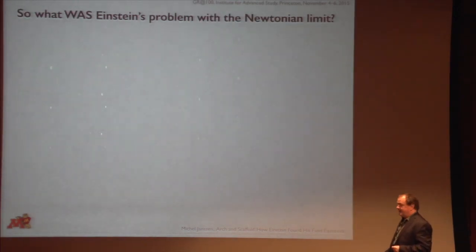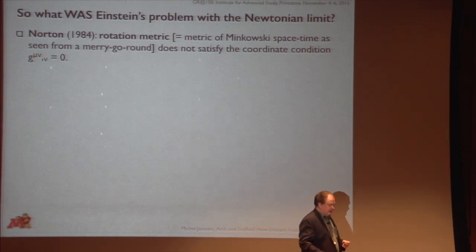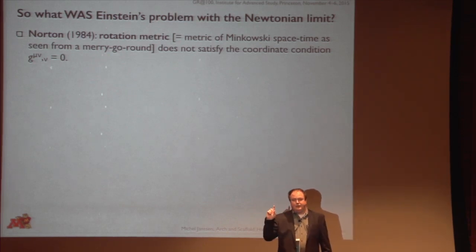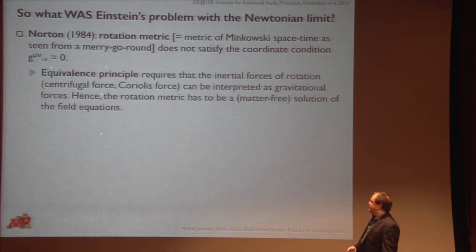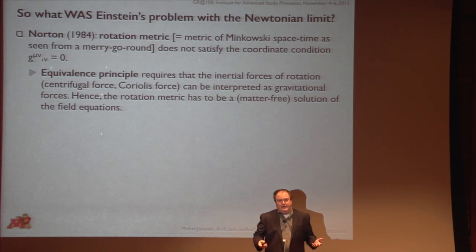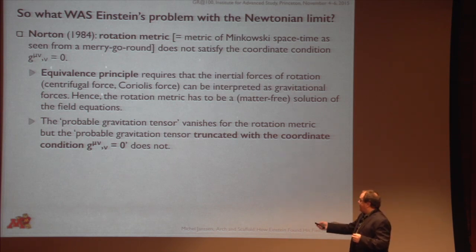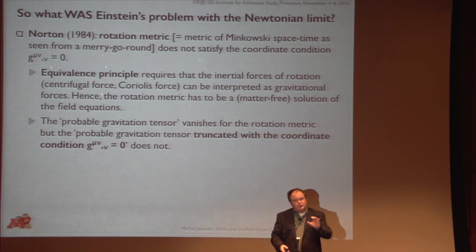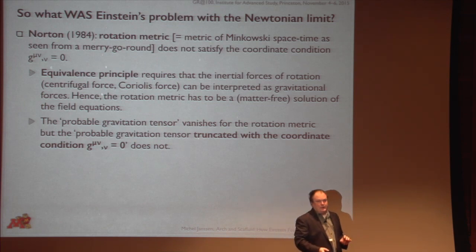So it seems that wasn't the problem. But then what was? John Norton, in a groundbreaking paper on this Zurich notebook back in 1984, put his finger on what the problem was. If you look at the metric of Minkowski spacetime as viewed from a merry-go-round, that metric is not going to satisfy that coordinate condition. That was very important to Einstein — that that metric satisfies the vacuum field equations because that implements the equivalence principle for the case of a rotating observer. So the probable gravitation tensor — half the Ricci tensor — vanishes for the rotation metric. But once you truncate it by imposing the condition that the divergence of the contravariant metric vanishes, it no longer is a solution. That was the problem.